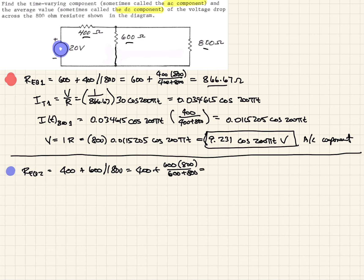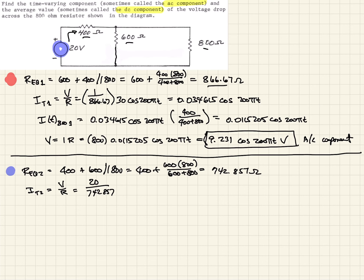When we work that out, REQ from the second source equals 742.857 ohms. Now we calculate the total current from the DC source: I_total from source two equals 20 over 742.857, which gives us 0.02693 amps. That's our total current for the DC analysis.